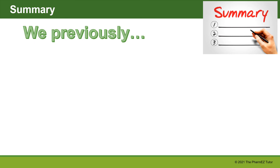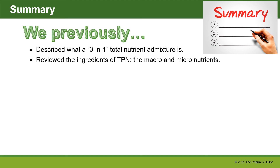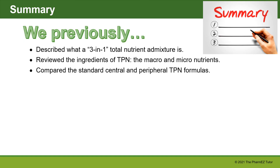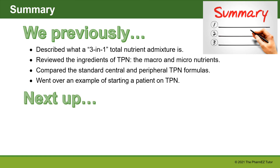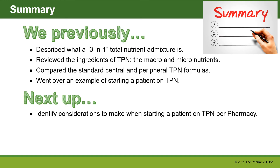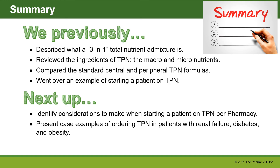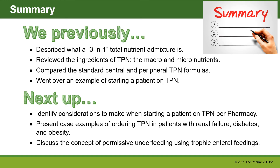In summary, we described what a 3-in-1 total nutrient admixture is, reviewed the ingredients of TPN including macro- and micronutrients, compared the standard central and peripheral TPN formulas, and went over an example of starting a patient on TPN. Next up, we'll identify considerations when starting a patient on TPN per pharmacy, present case examples for patients with renal failure, diabetes, and obesity, and discuss permissive underfeeding using trophic enteral feedings.